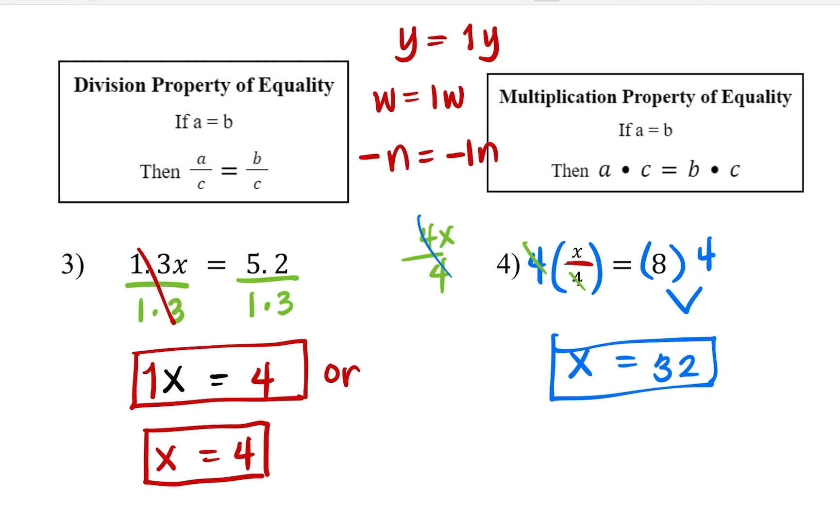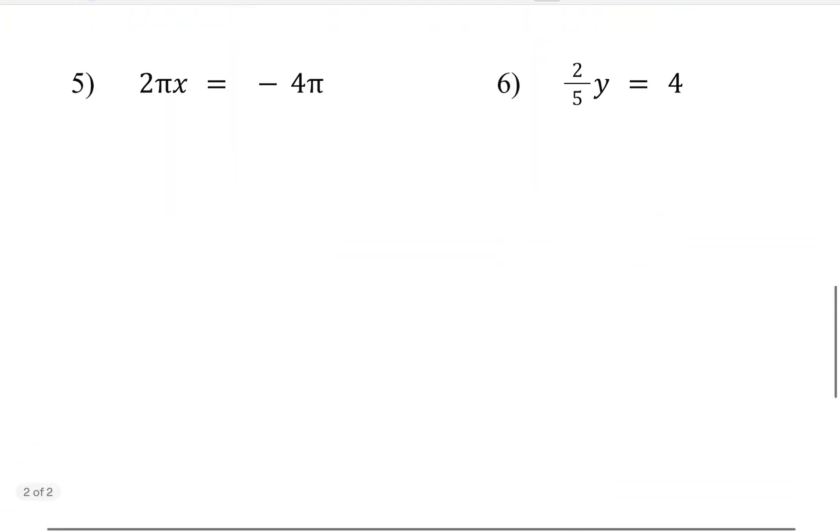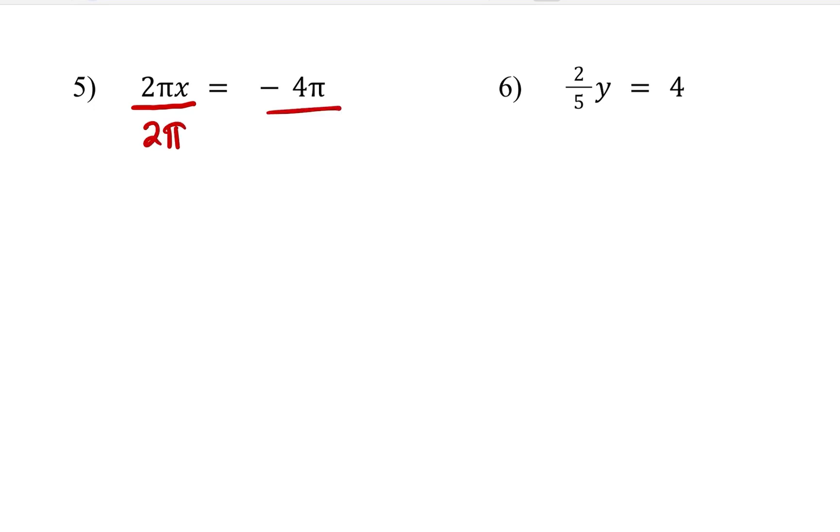Let us try some tricky examples. Number 5, we want to get the x by itself. So we are going to divide the left-hand side of the equation by any coefficient that's with the x, and that is 2π. And we are going to do that on the right-hand side as well. So this will eliminate the 2 and the π, which will leave us with x on the left side. And on the right side, it will give us negative 2. Negative 4 divided by 2. π is going to get canceled out. That is going to be equal to 1. So our answer is x equals negative 2.